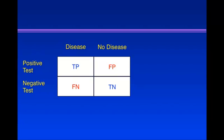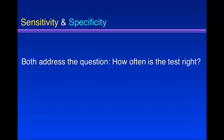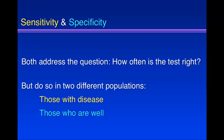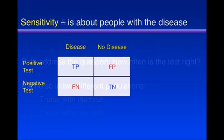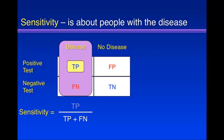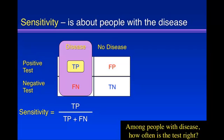So the 2x2 table often looks like this: TP, FP, FN, and TN. Now, sensitivity and specificity both address the question: how often is the test right? But they do so in two different populations — those with disease and those who are well. Sensitivity is about people with disease. They're in this column, which is the denominator: true positives plus false negatives. The numerator is the good result — the number of true positives. Sensitivity addresses the question: among people with disease, how often is the test right?